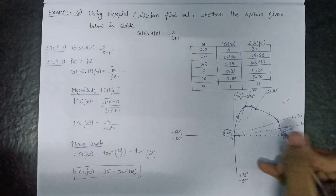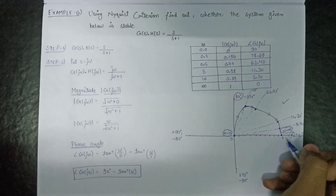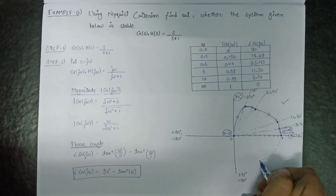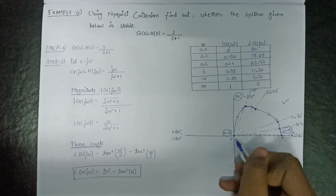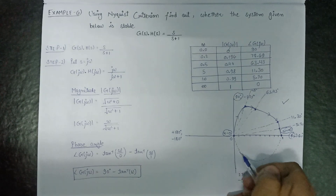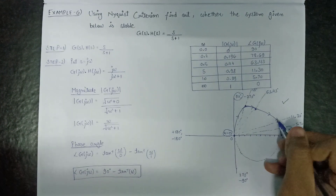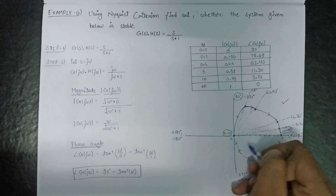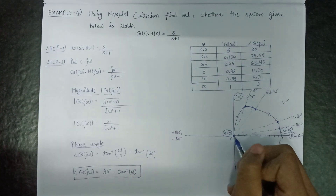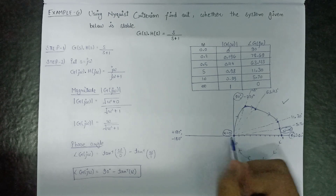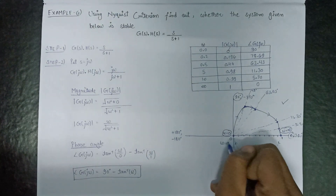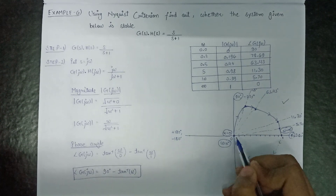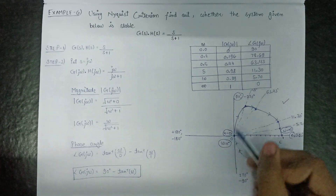Now let us draw our Nyquist plot. Since the Nyquist plot is nothing but a mirror image of the polar plot, its mirror image will be like this. Following the clockwise direction, the Nyquist plot terminates at the origin at ω equals to 0 minus. Since 0 plus and 0 minus are both connected to each other, this is a complete Nyquist plot.